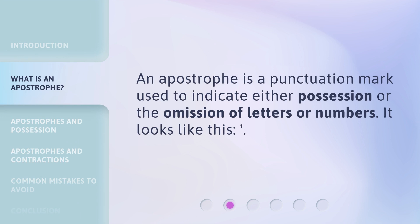An apostrophe is a punctuation mark used to indicate either possession or the omission of letters or numbers. It looks like this.